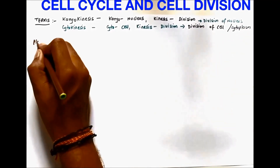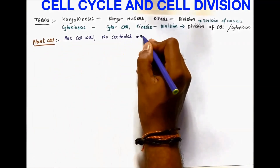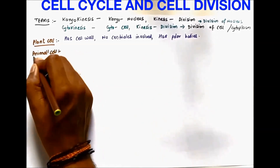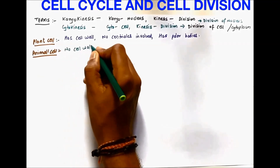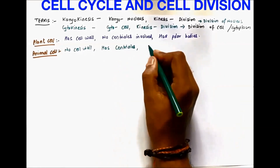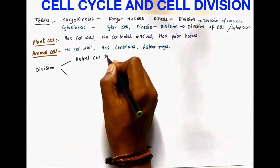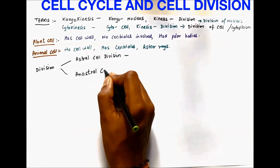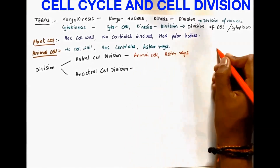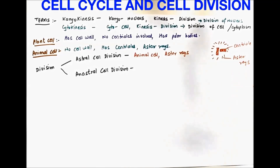In plant cells, there is a cell wall, no centriole is involved, and there are polar bodies. In animal cells, there is no cell wall, there are centrioles which produce aster rays. There are two types of division: astral cell division, found in animal cells because aster rays are involved, and anastral cell division in plant cells where there are no aster rays but polar bodies instead.